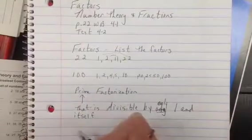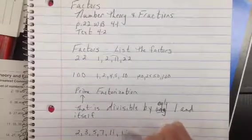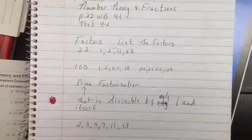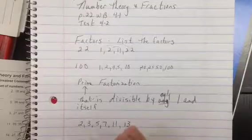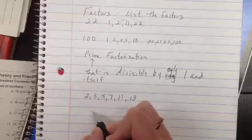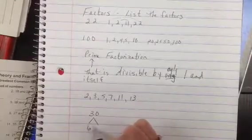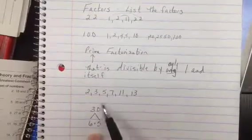So examples of prime numbers are things like 2 and 3 and 5 and 7 and 11 and 13. So if you're asked to write the prime factorization, you're going to make one of these cute little factor trees where if I started with 30, 30 can break up into 6 times 5. Good news, 5 is on my prime list.